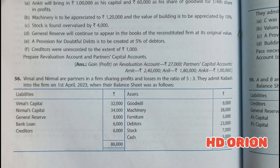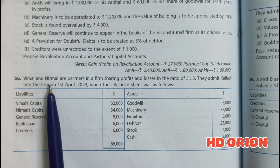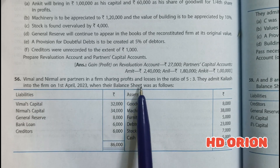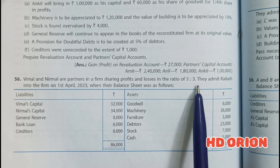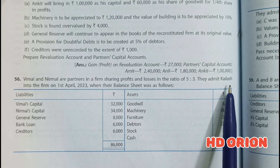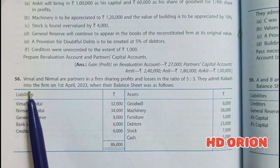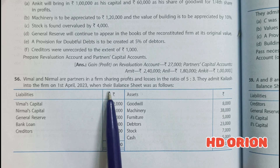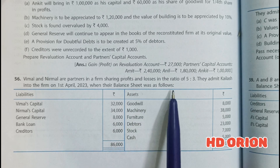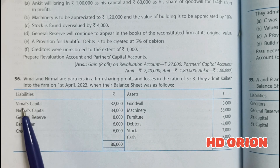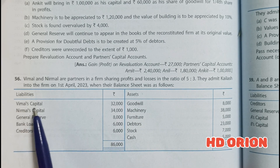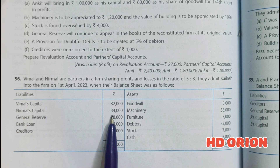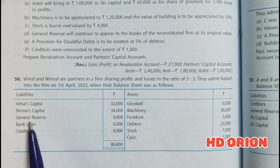Question number 56. Vimal and Nirmal are partners in a firm sharing profits and losses in the ratio of 5 to 3. They admit Kailash into the firm on 1st April 2023. Their balance sheet shows Vimal's capital rupees 32,000 and Nirmal's capital rupees 34,000.